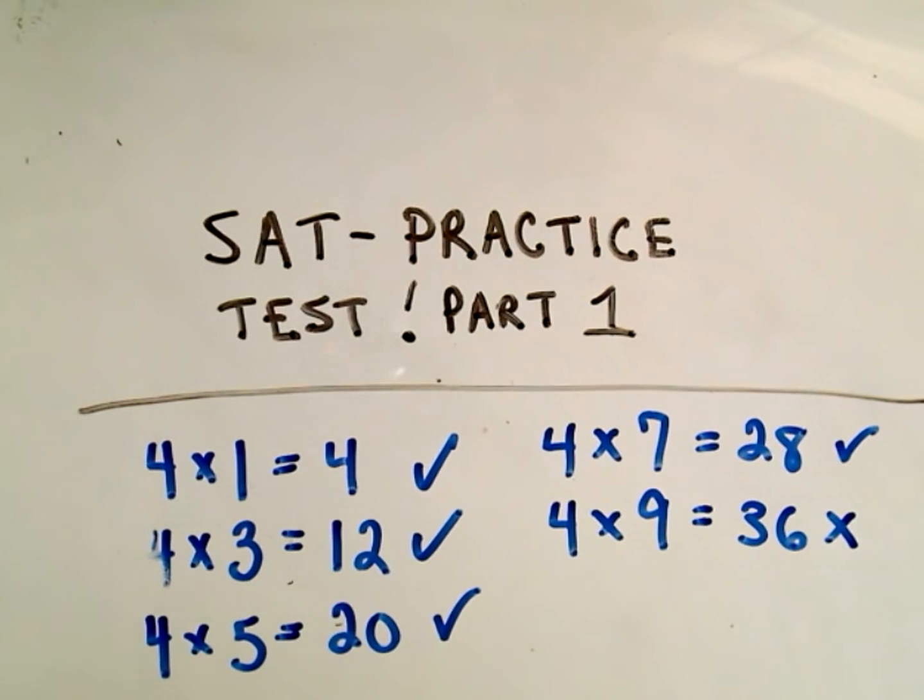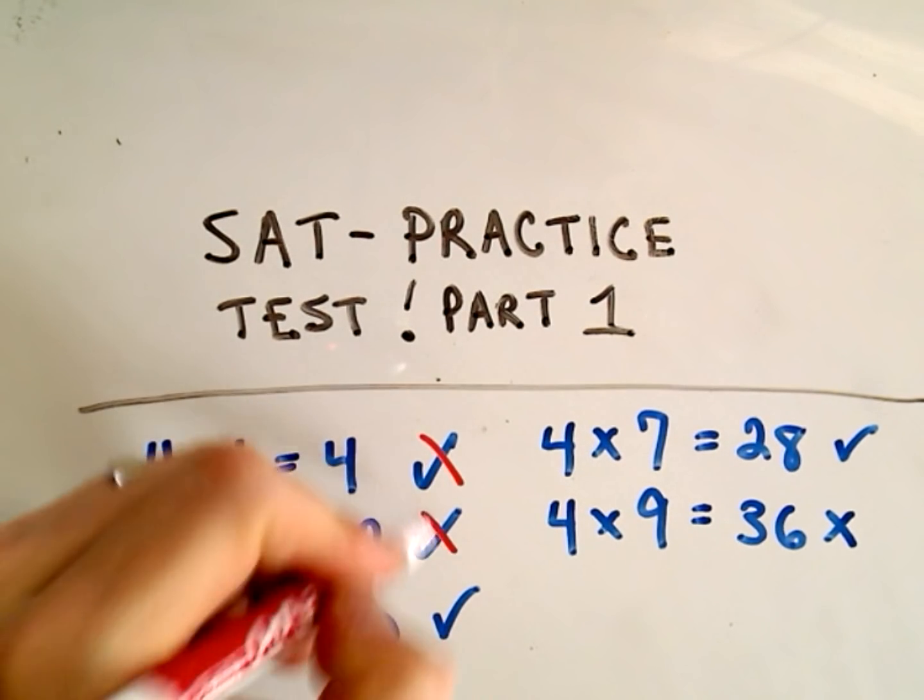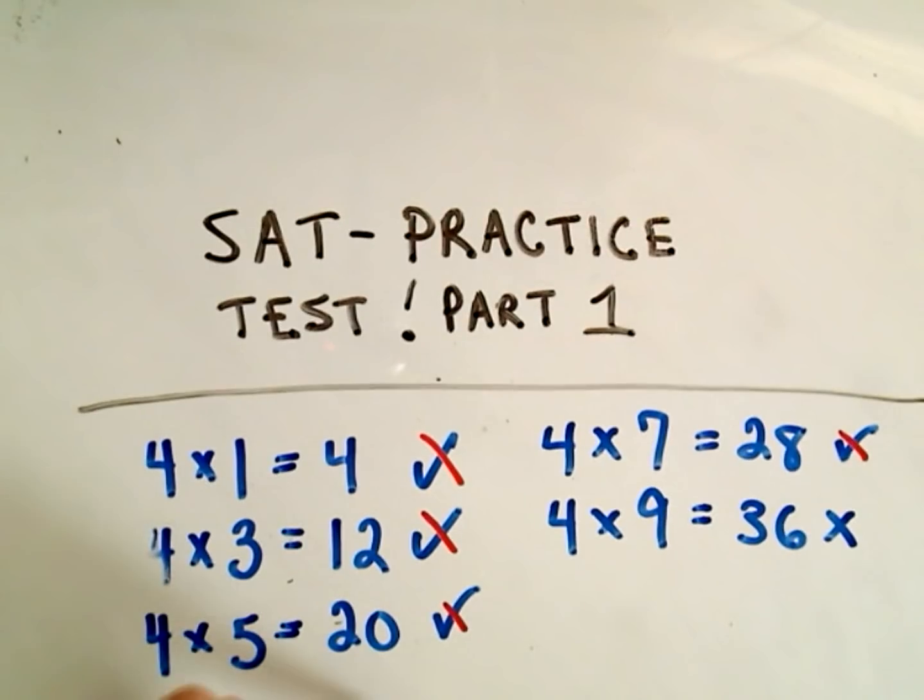Well, that's certainly not less than 36. So we have 1, 2, 3, 4 numbers. So there are 4 positive integers less than 36 that are equal to 4 times an odd integer.